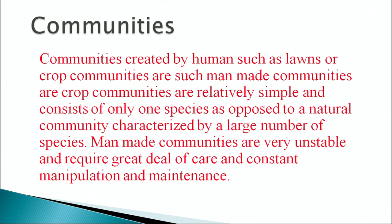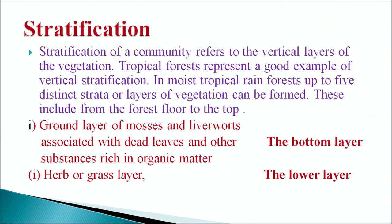Man-made communities are very unstable and require a great deal of care, constant manipulation and maintenance. Stratification of a community refers to the vertical layers of vegetation. Tropical forests represent a good example of vertical stratification. In moist tropical rainforests, up to five distinct strata or layers of vegetation can be formed, ranging from the forest floor to the top. The ground layer consists of mosses and liverworts associated with dead leaves rich in organic matter — this forms the bottom layer. Above it is the herb or grass layer, the lower layer.